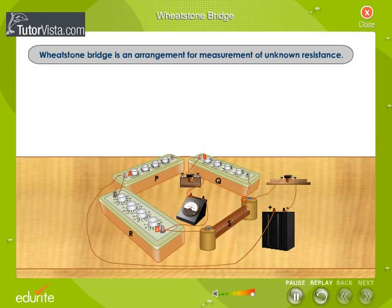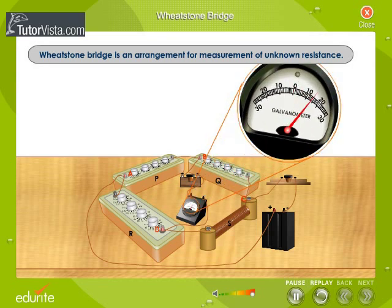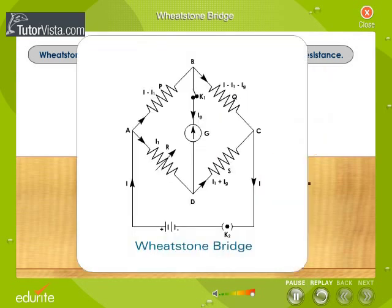First we will have to balance the bridge. The values of the resistors P, Q, R and S are so adjusted that the galvanometer shows no deflection on closing the key. This means that no current is flowing in arm BD, and therefore the potential at B is equal to the potential at D.